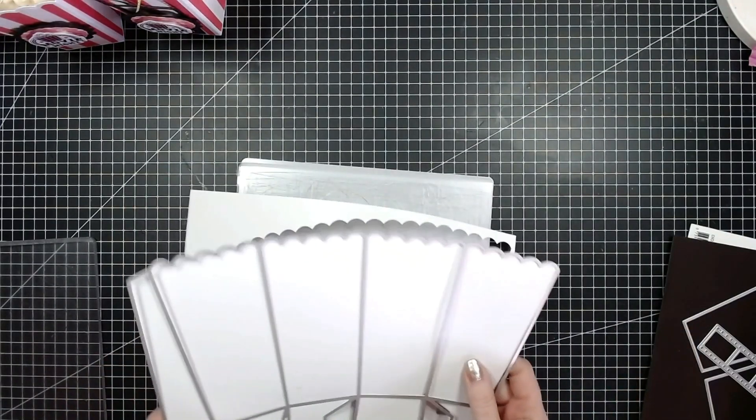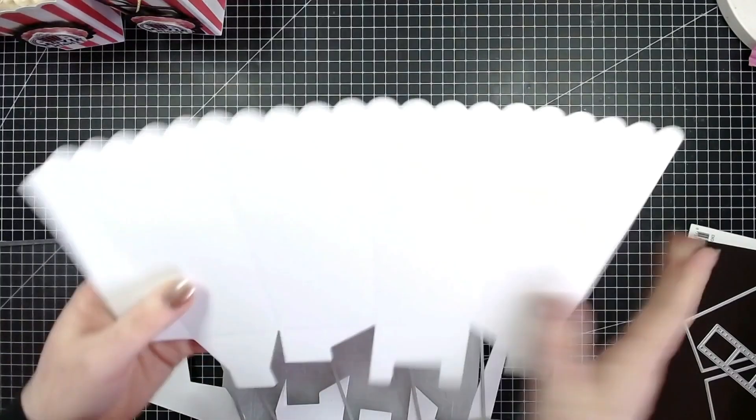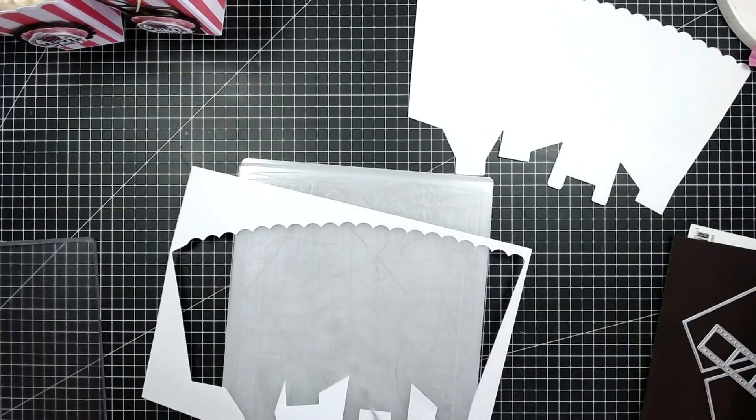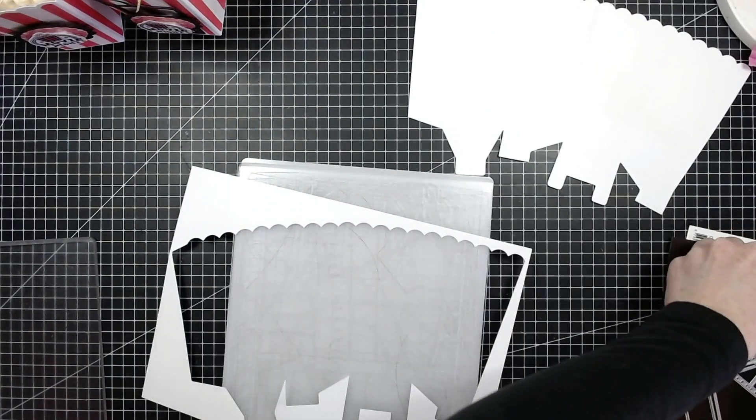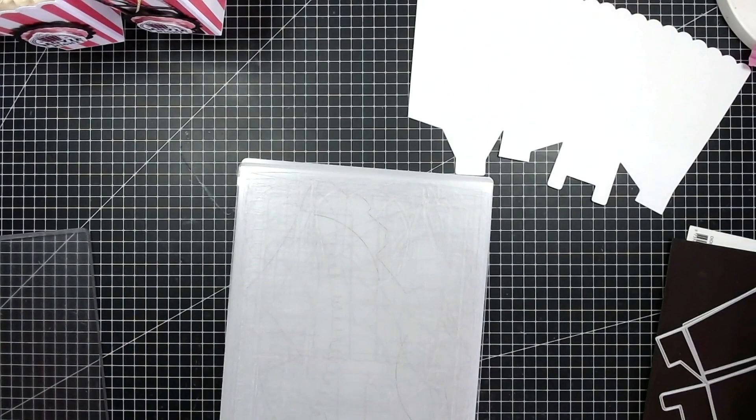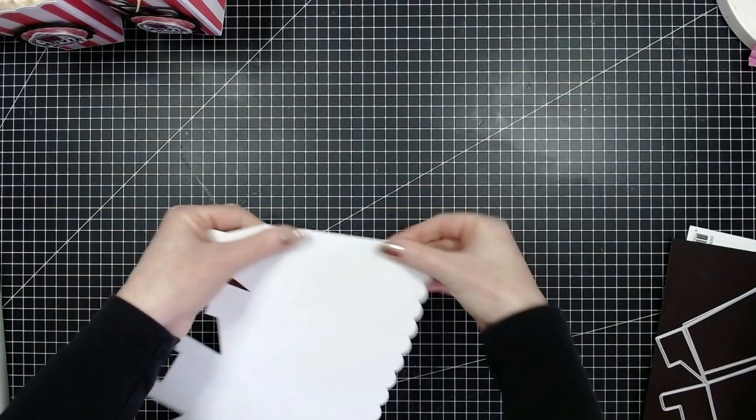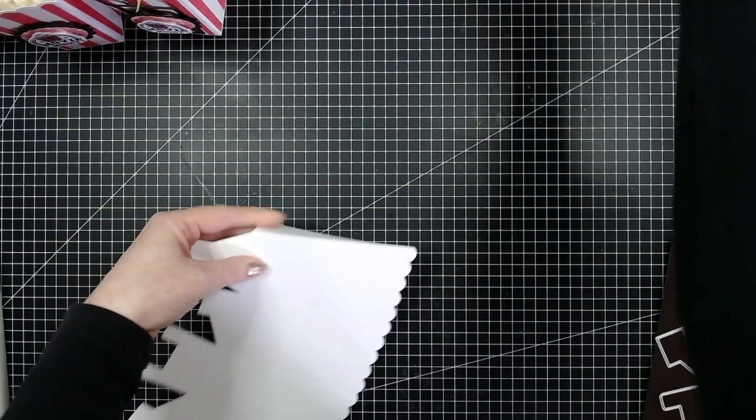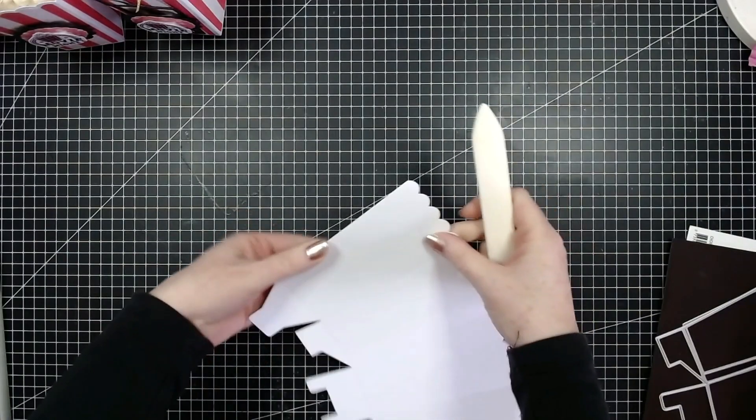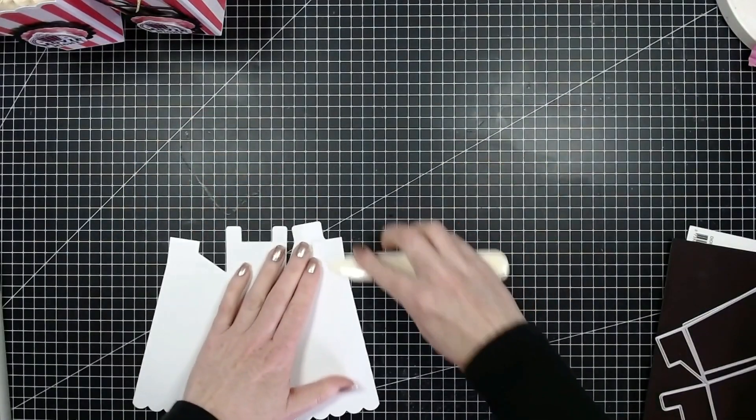Okay, so that has cut this out completely. What I like to do is add all of my mats before I pop it together. What I'm going to do next is do all of my score lines. This will do all of the angled score lines for you. You can use a bone folder if you want. Fold everything down and then we can move on to making the mats.